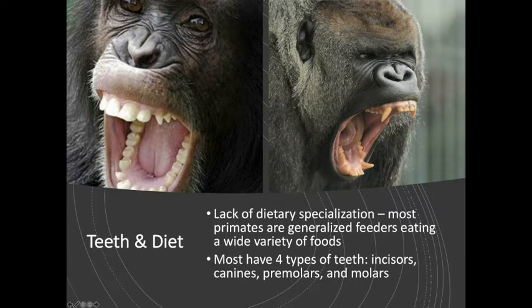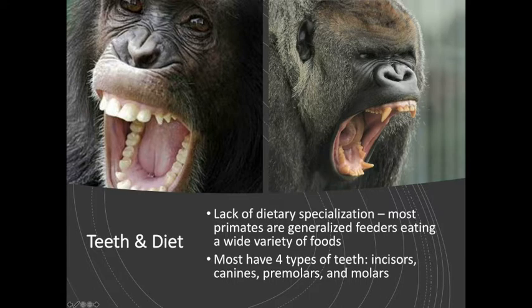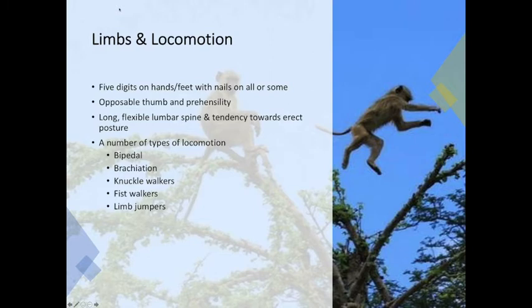One of the things we're going to see in primates is that they lack dietary specialization. They are omnivorous, and so they eat a lot of different foods, and you see that represented in their teeth. Primates have four types of teeth: incisors, canines, premolars, and molars. Here you see on the left a chimp whose teeth are very similar to that of a human being, and on the right a gorilla whose teeth are also very similar, though there are some differences — some molar ridges vary, and you can see the development of the canines.